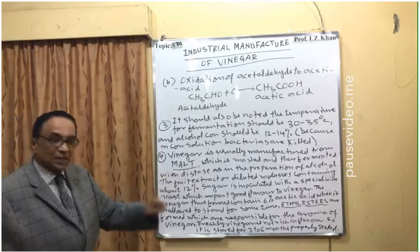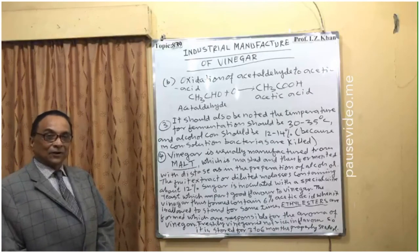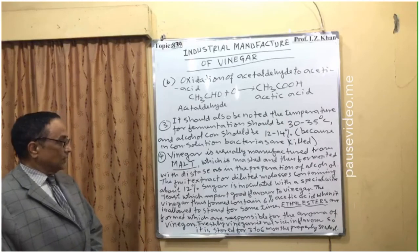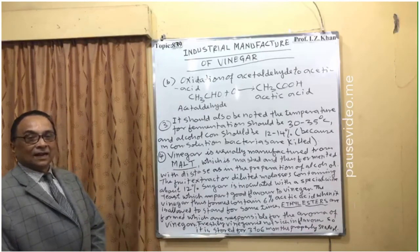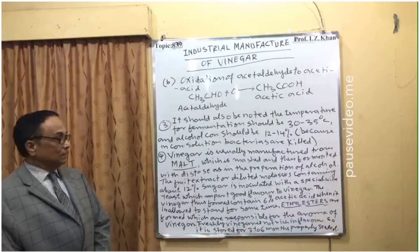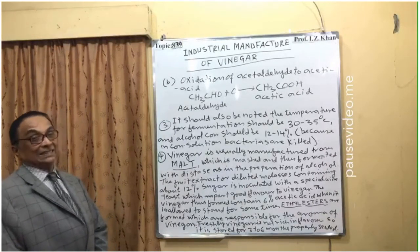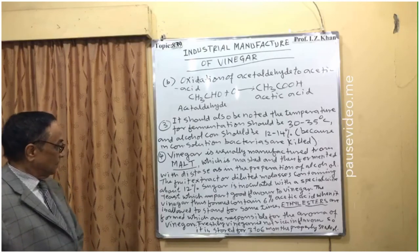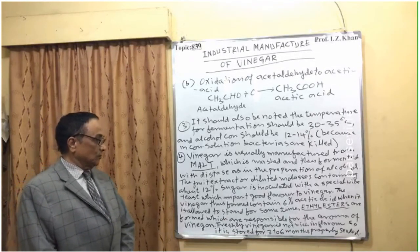The freshly prepared 6% acetic acid — that is vinegar — is not having any good flavor unless it is kept for some time with a cover. When vinegar is formed containing 6% acetic acid and it is allowed to stand for some time, there will be an esterification reaction. There will be formation of ethyl esters, and those ethyl esters are actually responsible for giving a very good taste and flavor to vinegar. Freshly prepared vinegar is not rich in flavor, so it is stored for three to six months.